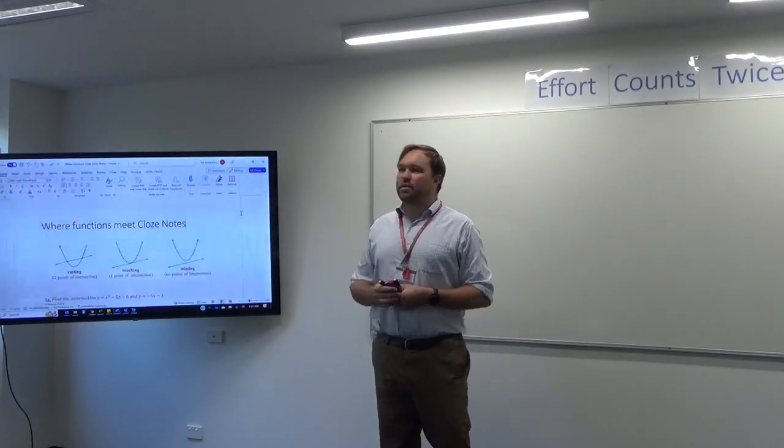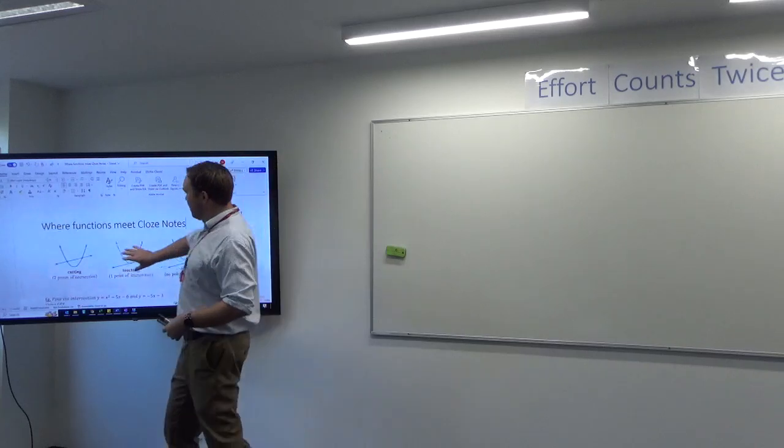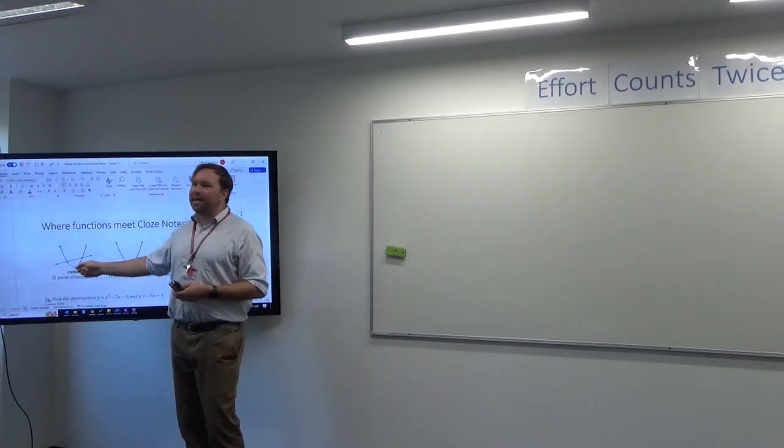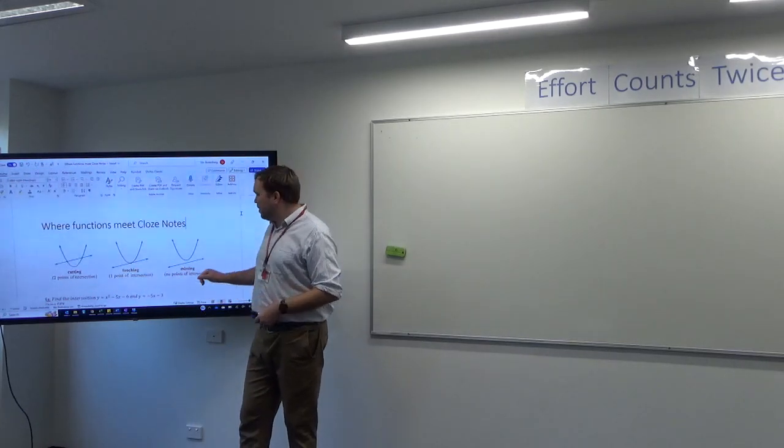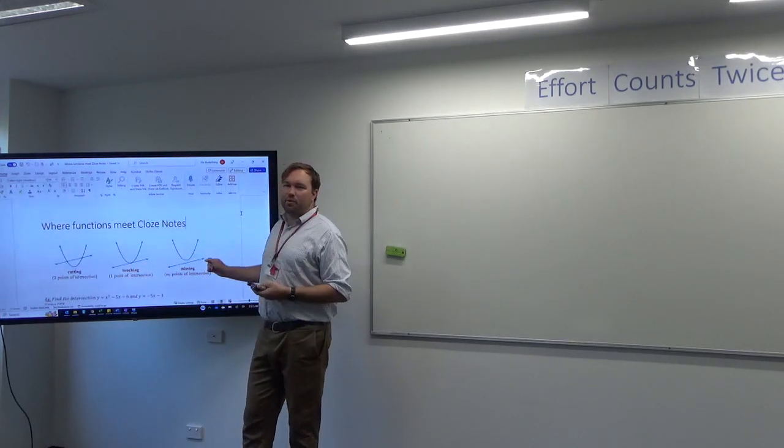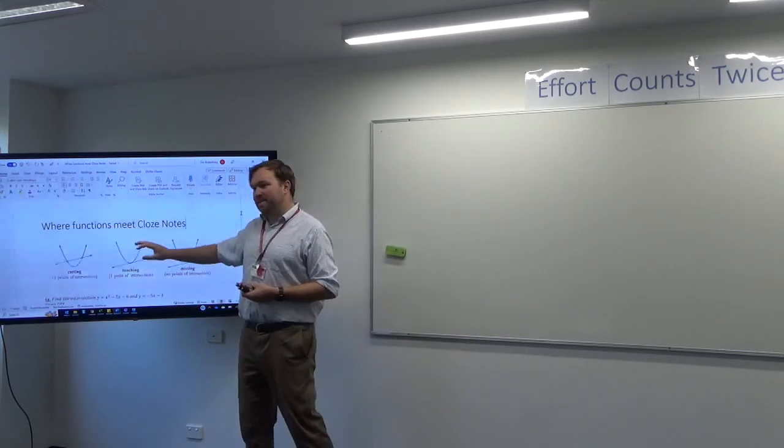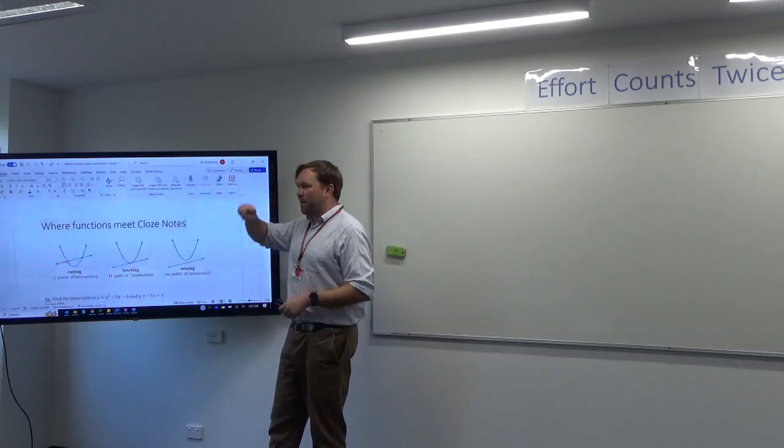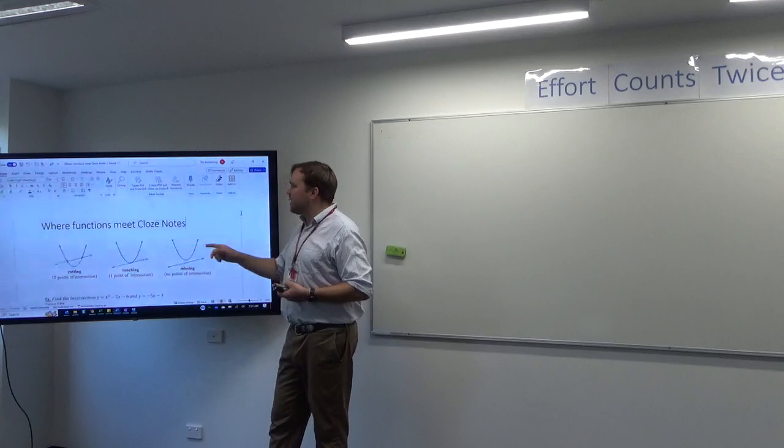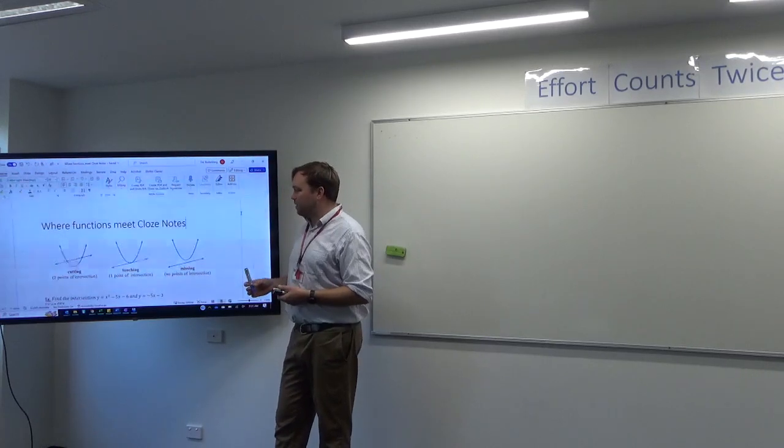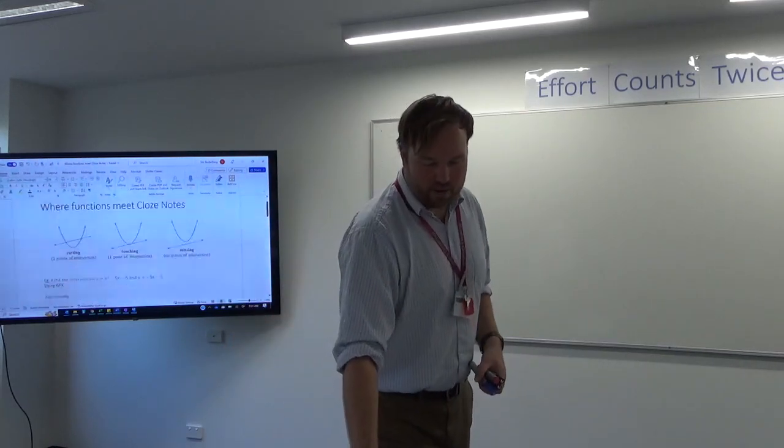It's worth noting that if there are two graphs in a Cartesian plane, three things can happen: they can cut at two points of intersection, they can touch at one point of intersection, or they can miss entirely with no points of intersection. This should maybe jog your memory from the number of axis intercepts. We have the same options for a quadratic touching an axis, and the discriminant helped us there determine which option would happen. Similarly here, discriminant will play a part. But to start with, we're going to look at a pair of graphs.